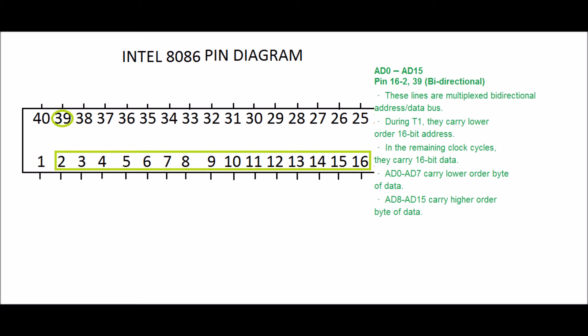It means these lines are used for transfer of both data as well as address in the microprocessor. During T1 clock cycle, they carry lower order 16-bit address.